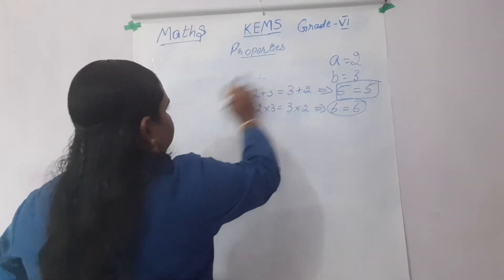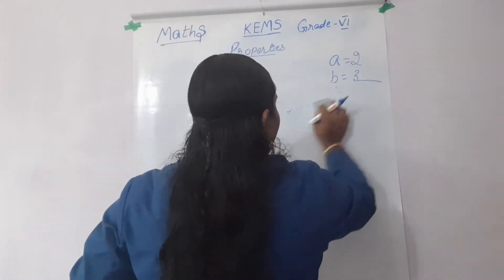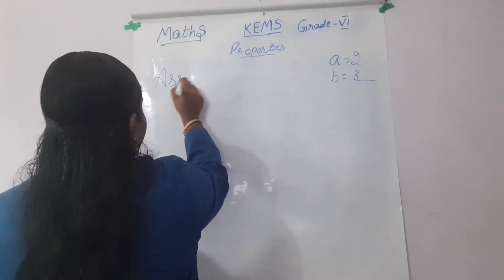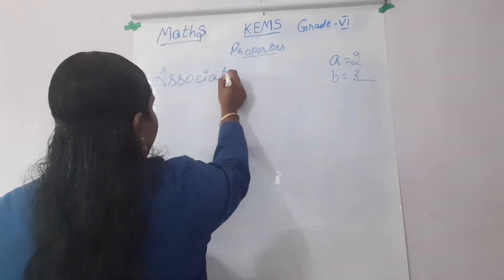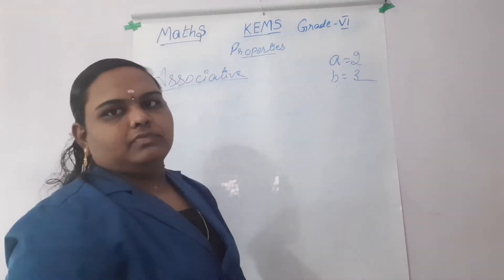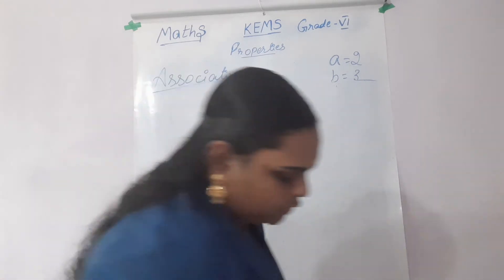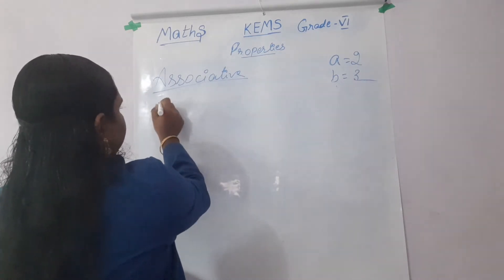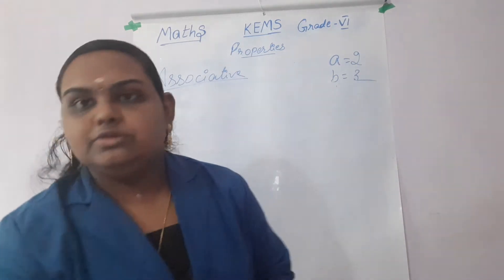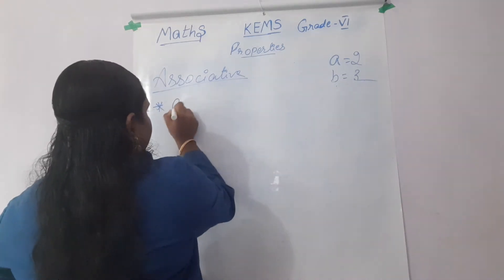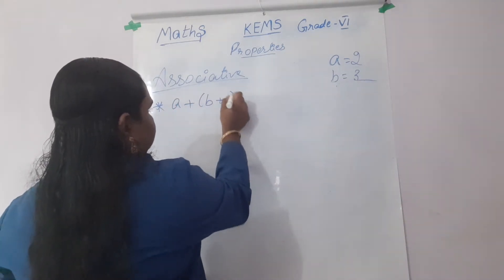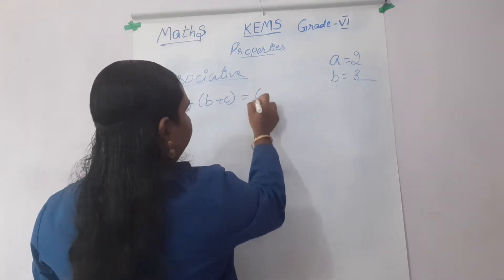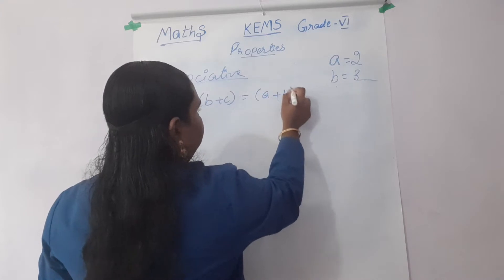Next property — that is the third property. You can see the third property: that is associative property. What is associative property? The condition of associative property is A plus B plus C — that is for addition. A plus B plus C is equal to A plus B plus C. This is the condition for addition.